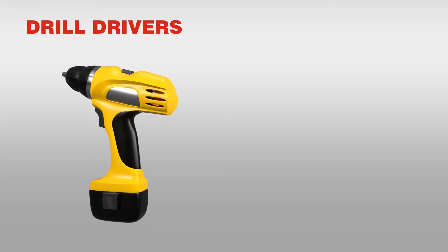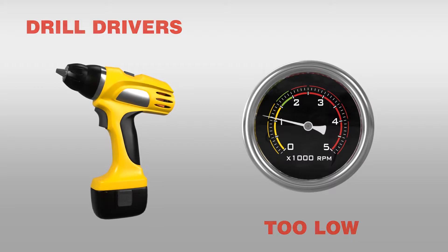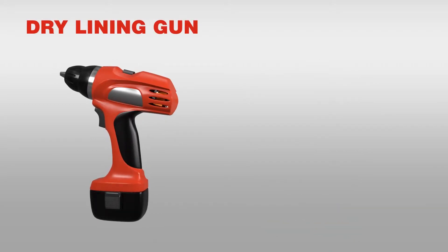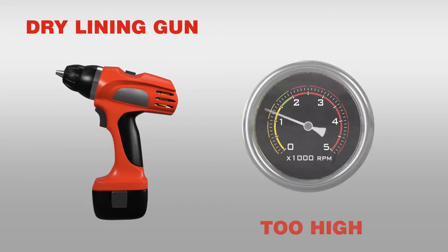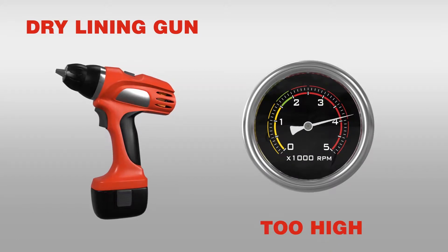For example, a drill driver will only give you 800 revolutions per minute which is too low to properly drill the hole. In contrast, a dry lining gun can turn at over 4000 revs which will burn out the fasteners drill point.